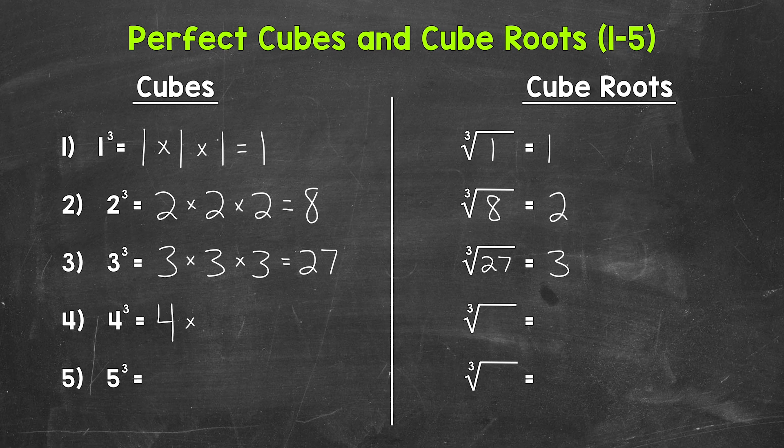Let's move on to number four where we have four cubed. That means four times four times four. Four times four is sixteen times four is sixty-four.